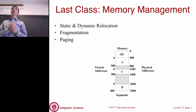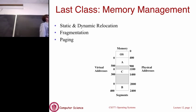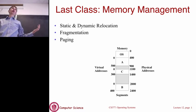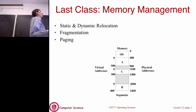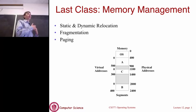One of the big problems with static and dynamic relocation was fragmentation. As you're starting and ending processes, you end up with gaps in memory that are maybe too small to fit another contiguous process in — that's external fragmentation. So we introduced the idea of paging largely as a way to get rid of external fragmentation.